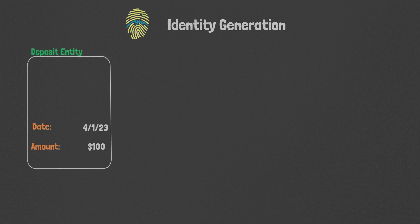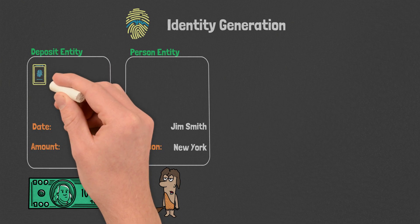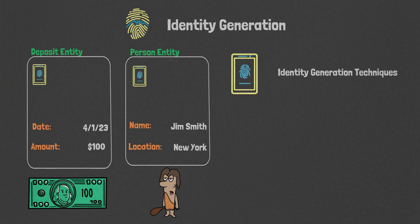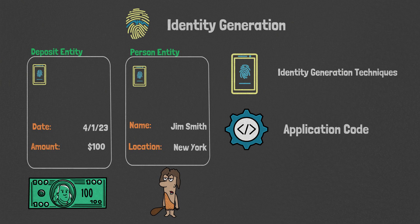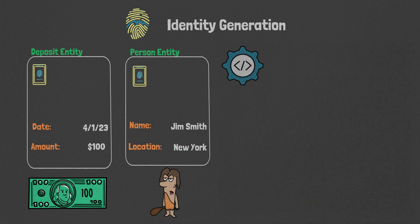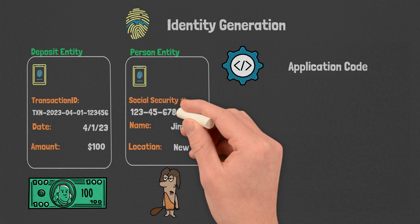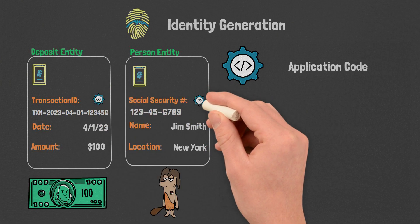Identity generation. When creating our entities, we must create an identity for them so they can be effectively tracked in our system. There are typically two different ways of handling identity generation, each with different tradeoffs and considerations. The first is to have the code itself generate the identity. The other is to have the database generate the identity. The first technique is to have the application fulfill the responsibility of identity generation. You might choose this option if your unique identifier needs to be public or the requirements go beyond a simple integer.